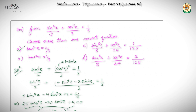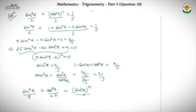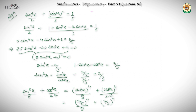But this is not the point where you stop, because we have other options to verify. Now I will check the next option. My expression is sin⁸x upon 8 plus cos⁸x upon 27. I will substitute the known values of sin²x and cos²x.